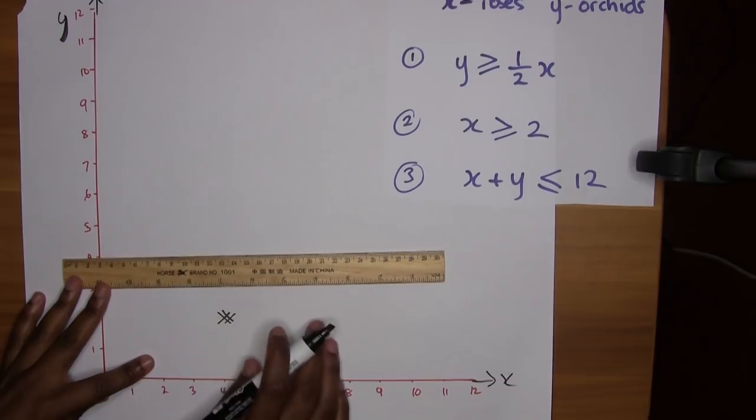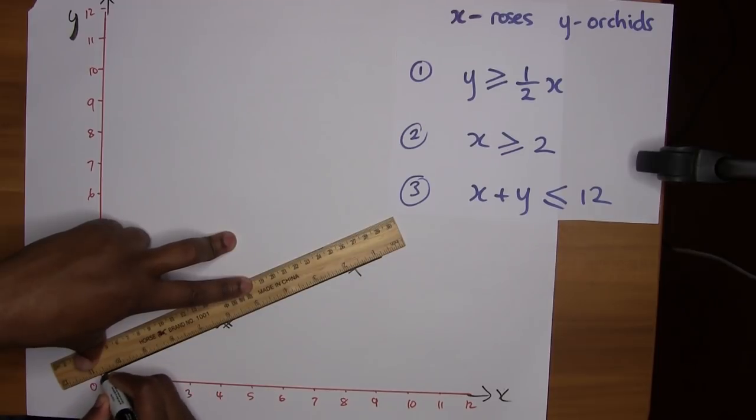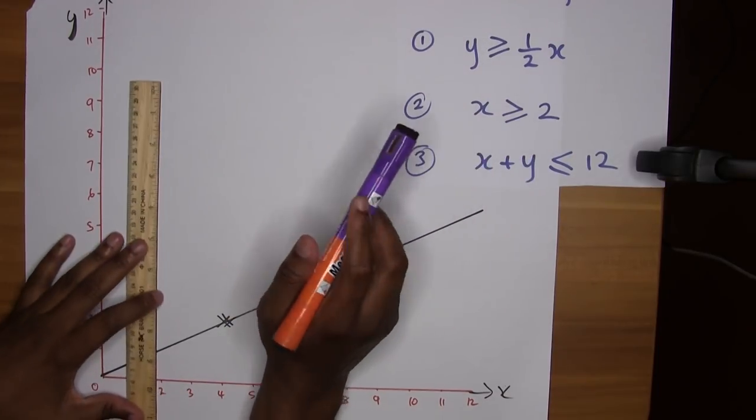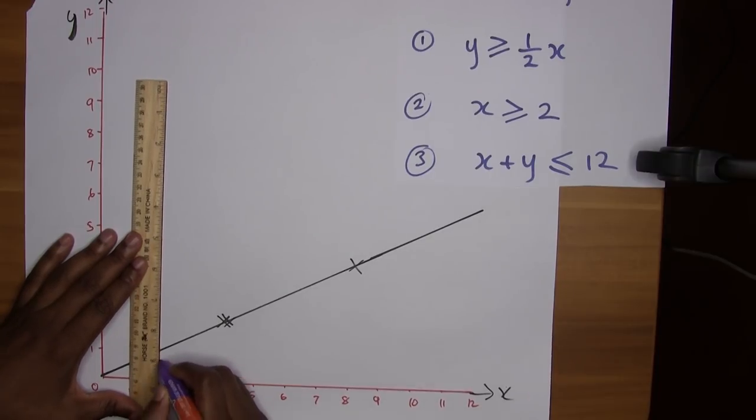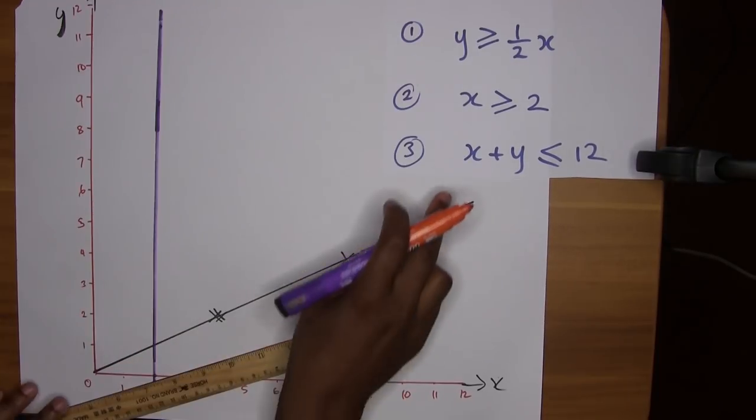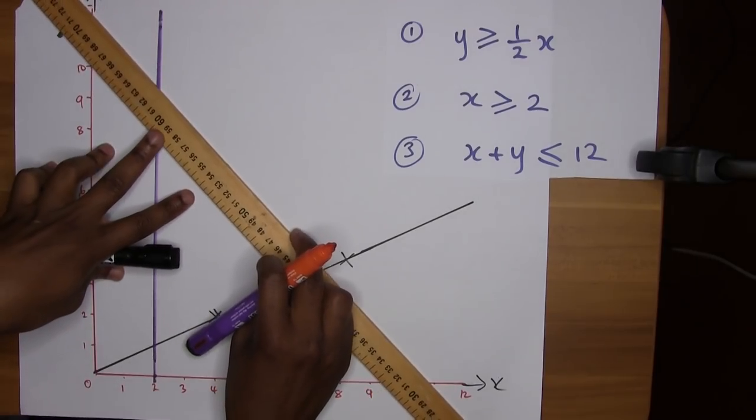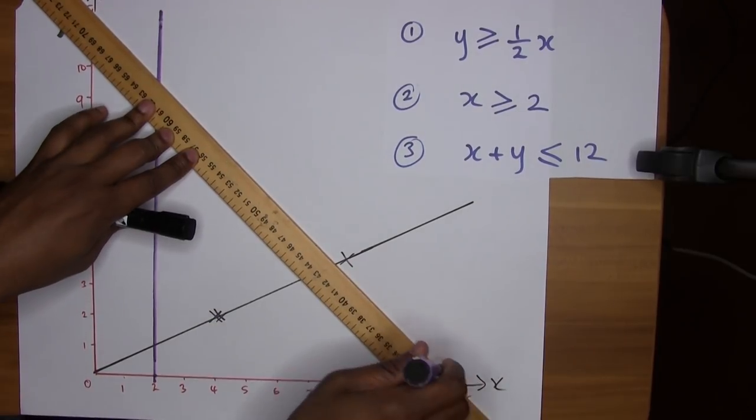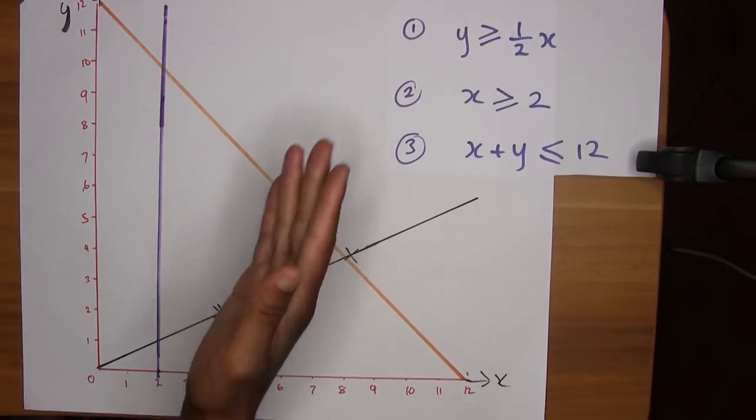This line would resemble something that looks like this. The second equation, x is greater than 2, I should get something that looks like this. I'm drawing a line where x is equal to 2 all along. For the third line, x plus y is less than or equal to 12, I could just connect it to 12 to each other. So 12 to 12 gives me something that resembles that.